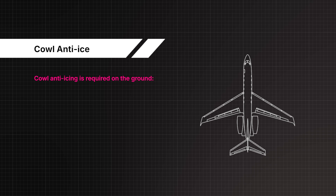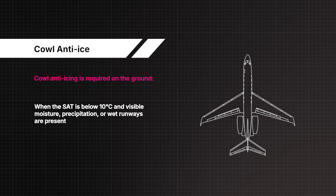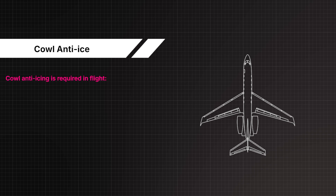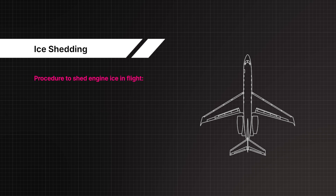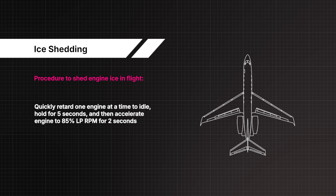Cowl anti-icing is required on the ground when the SAT is below 10 degrees Celsius and visible moisture, precipitation, or wet runways are present. In flight, cowl anti-icing is required as indicated in the cowl anti-icing table when visible moisture or precipitation is present or when signs of icing are observed. To shed engine ice in flight: quickly retard one engine at a time to idle, hold for 5 seconds, then accelerate engine to 85% LP RPM for 2 seconds.